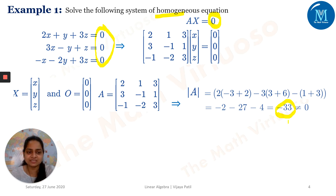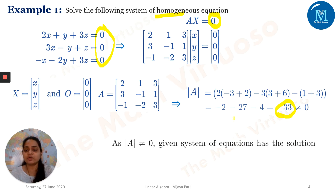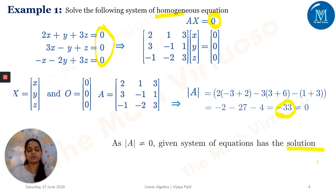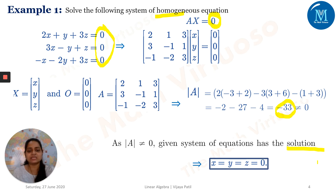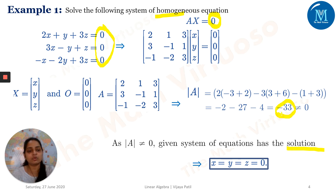Determinant of A is −33, which is non-zero. Therefore the system will have a unique solution. As we saw earlier, that unique solution is X = Y = Z = 0. All three unknowns go to zero because of the effect of B = 0.